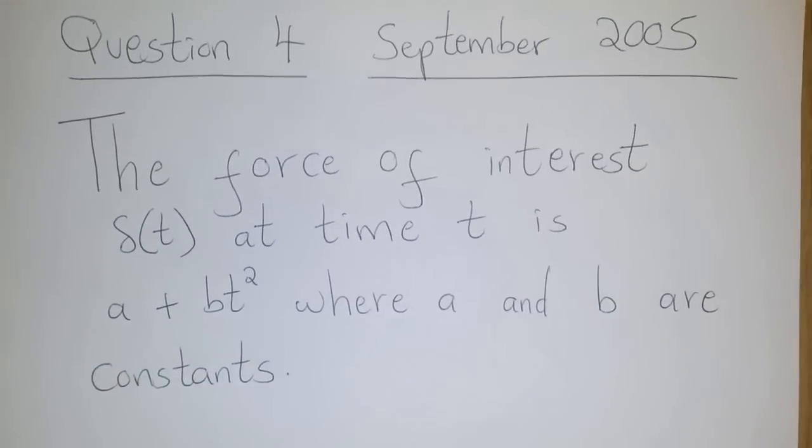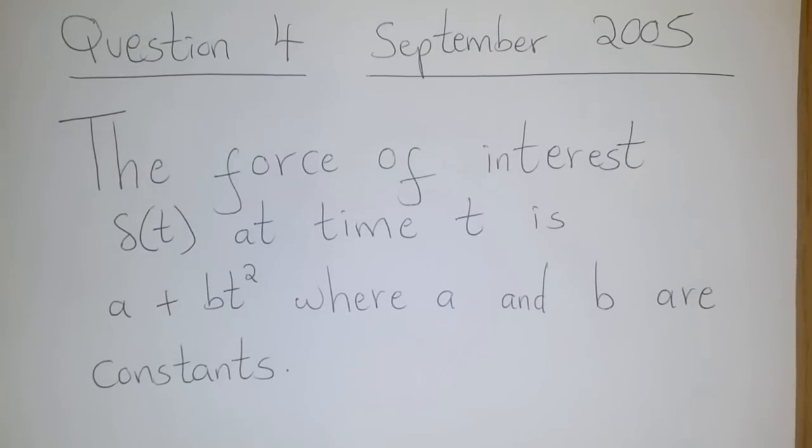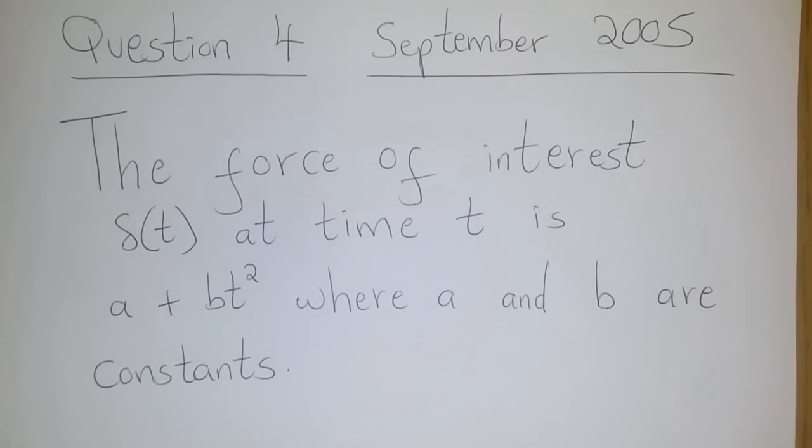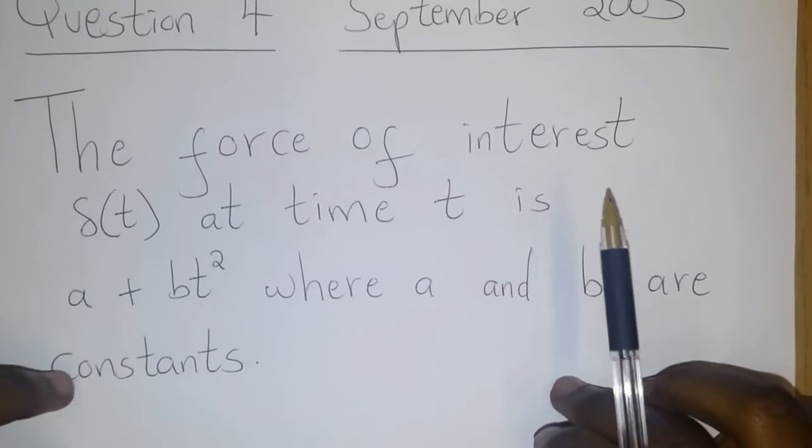In this session, we'll look at question 4 of the September 2005 paper. The force of interest at time t is given as a plus b t squared, where a and b are constants.